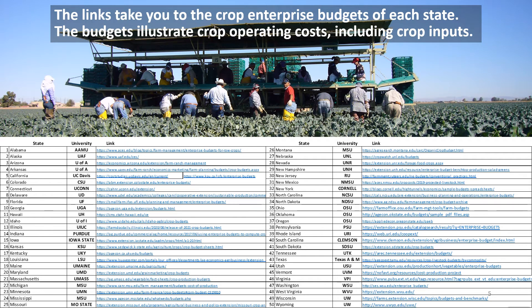We added a list of links to the agricultural extension service programs at the land-grant universities in every state. The links take you to the crop enterprise budgets for the major crops of each state. The budgets illustrate farm operating costs including crop inputs. The information is free and connects you to experts who help people with crop production questions.